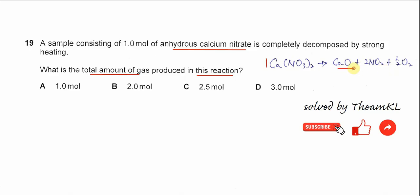Calcium oxide, NO2, and O2. Then we balance it. There will be one mole of calcium oxide, two moles of NO2, and half mole of O2. It's asking for the total amount of gas produced.